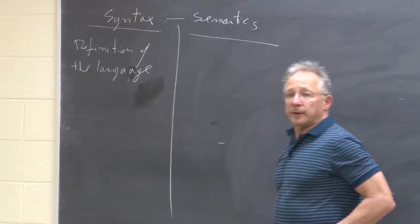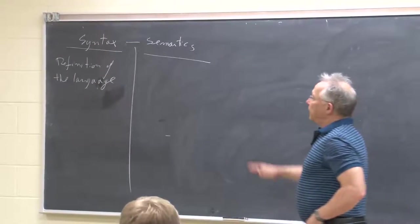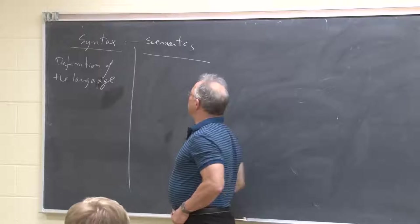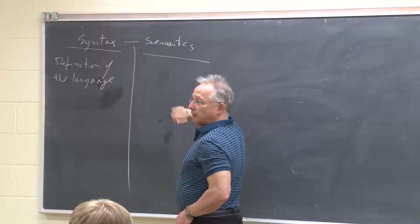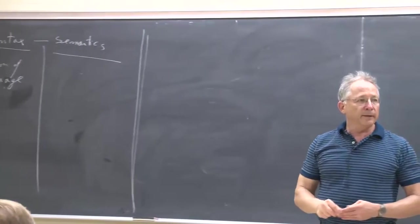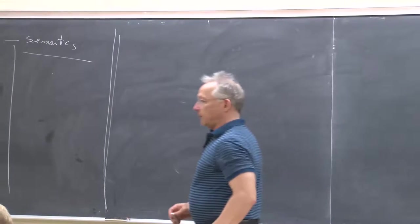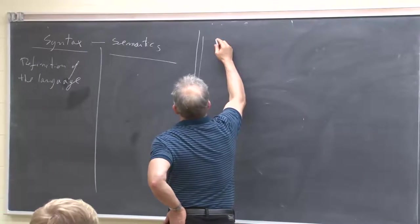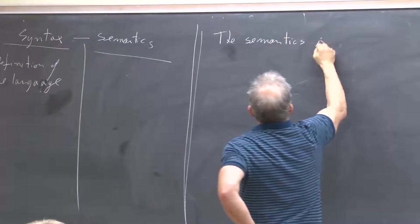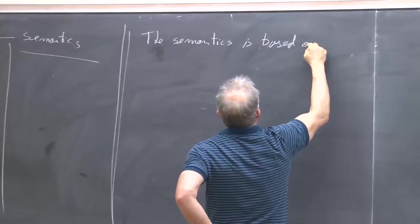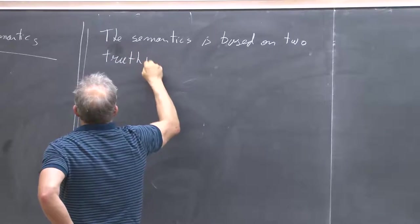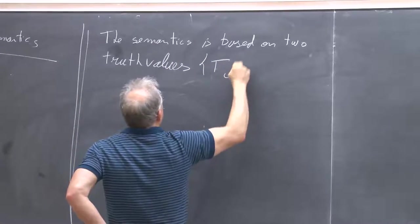We have an algorithm that allows us to check what belongs to the language or not. And now we want to turn to the semantics — we'll keep going between them, that's not the end of the story. So today we're going to start talking about the semantics. What is the semantics of propositional logic? The semantics is very simple — it is based on two truth values: true and false.